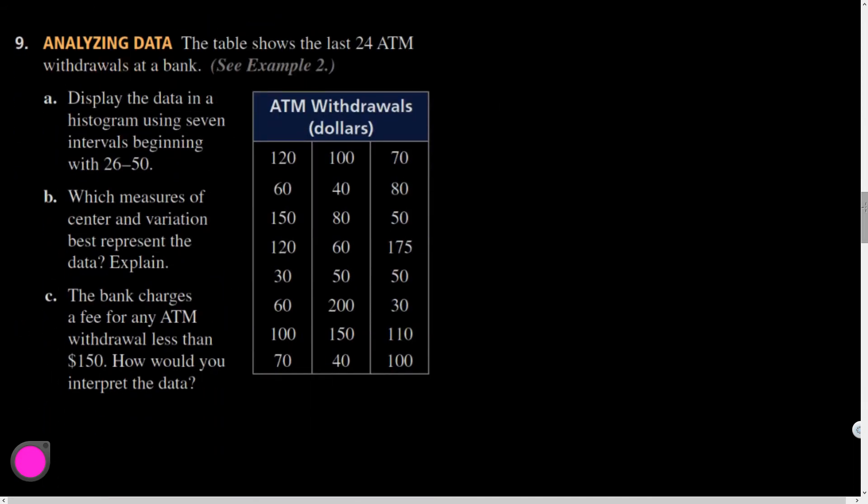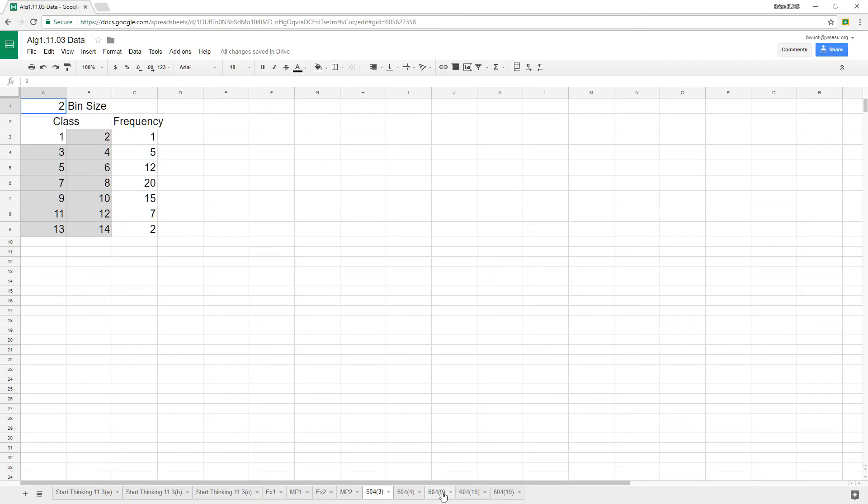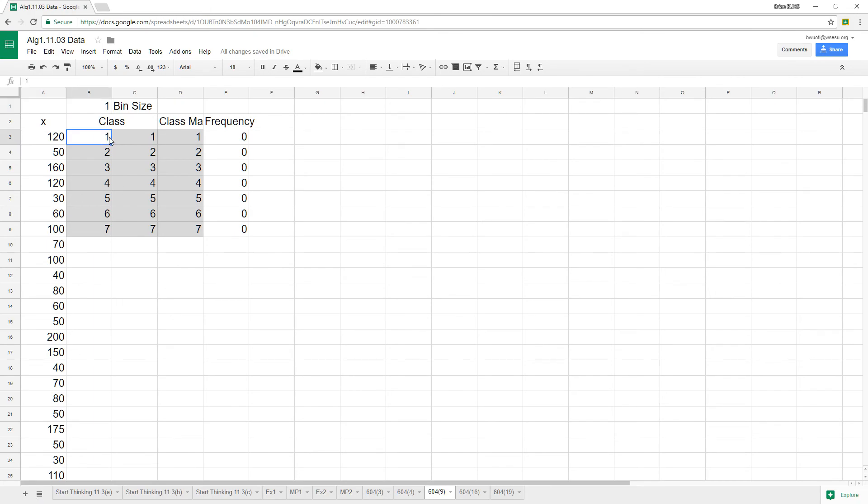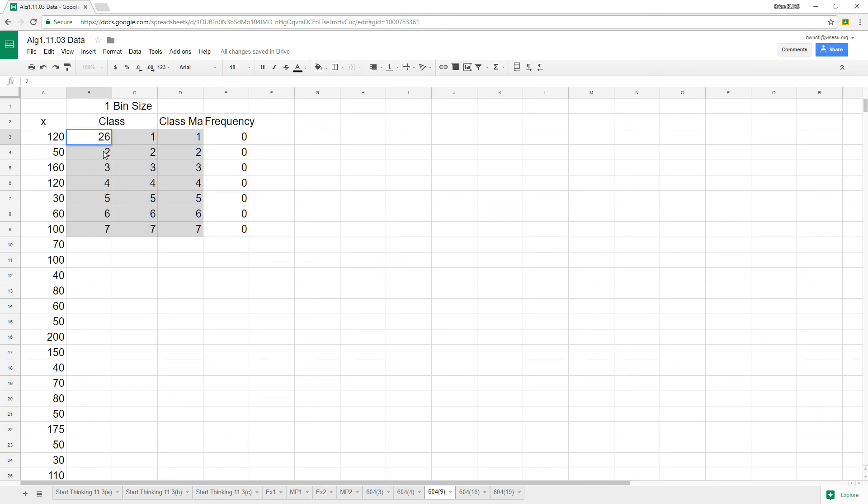All right, last question. Display the data in a histogram using seven intervals, beginning with 26-50. Which measures of center and variation represent the data? And then they ask about a particular thing. Let's see, this is question nine. Here we go. So here I've got the data listed. They wanted us to start at 26. So I'm going to start my classes 26. I was about to say, that's done lagging out on me. I was getting nervous. I was hoping my formulas were going to work. And 26-50, I'm going to have classes that are, I think, 24 should work. Yeah. So that's what it did. And then it gave me a frequency of the number of these numbers that landed in those categories.